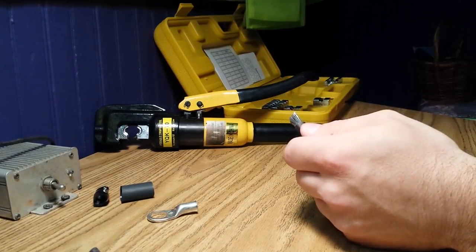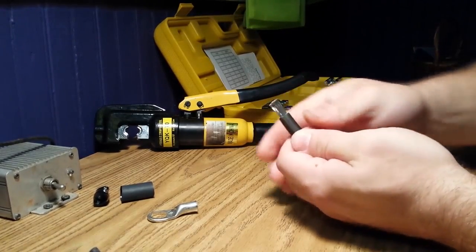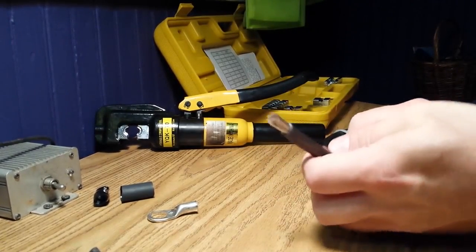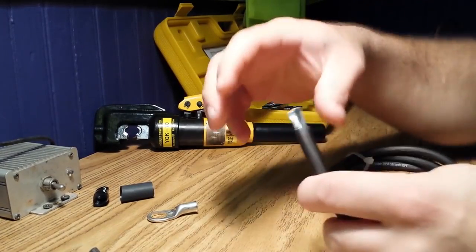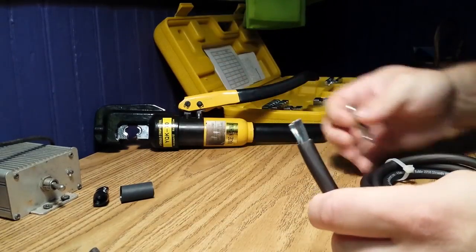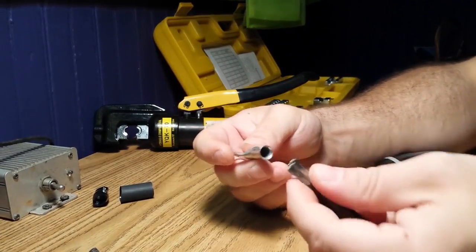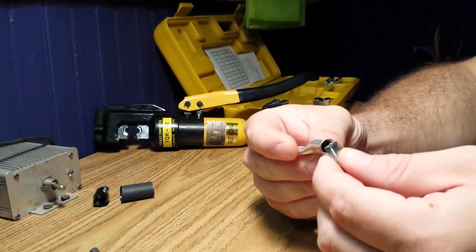There we go. As you can see I got all the insulation off. My method is I'm not going to twist the strands of copper, the tin copper wire. I'm going to use the pinch and push in method, that's what I like to use.